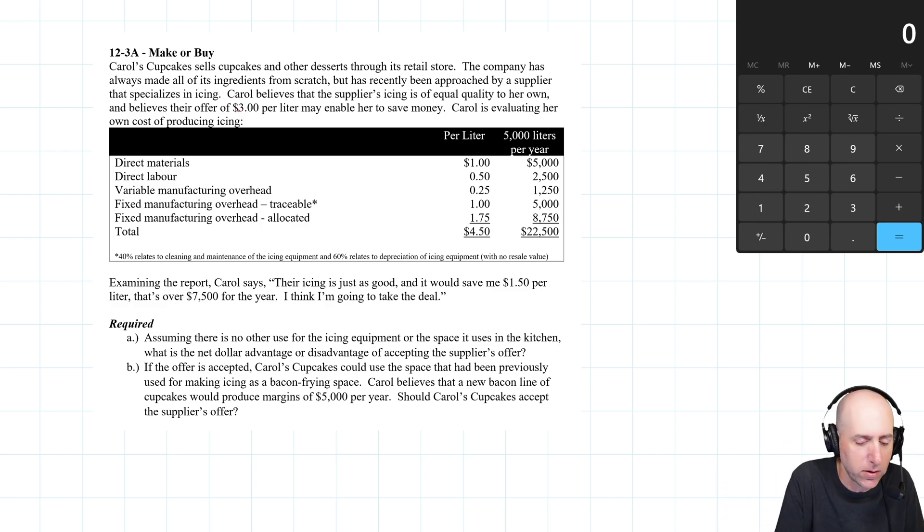And so you can see the dilemma appearing here. This is the make or buy dilemma. An outside supplier offers you a price and you are making a similar product and it's seemingly costing you more. And so the dilemma is, should we make it ourselves or should we bring it in from an outside supplier? Examining the report, Carol says that icing is just as good and it would save me $1.50 per liter. Yeah, that's true. $4.50 versus three, that's over $7,500 for the year. I think I'm going to take the deal. Well, let's see if that's a fair statement or not using relevant costs here.